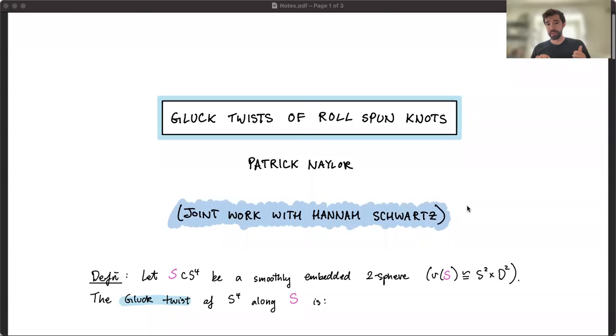So in the short time, I have three goals: I'm going to tell you what a Gluck Twist is, I'm going to tell you what a Roll Spun Knot is, and then I'm going to tell you about a theorem that Hannah and I proved.